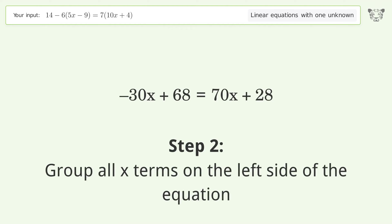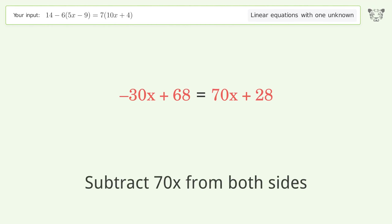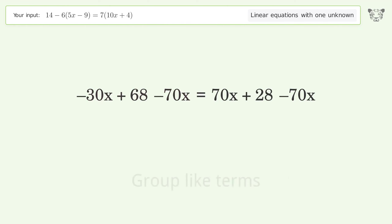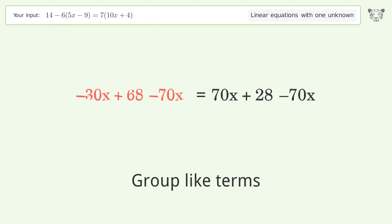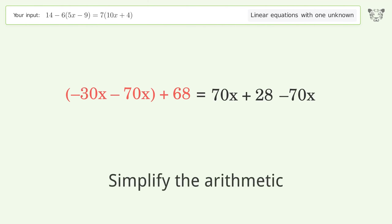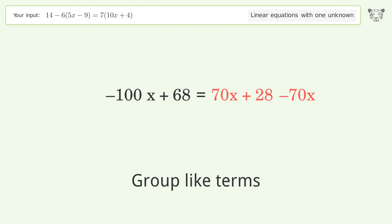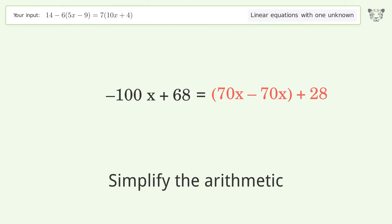Group all x terms on the left side of the equation. Subtract 70x from both sides. Group like terms and simplify the arithmetic. Group like terms again and simplify the arithmetic.